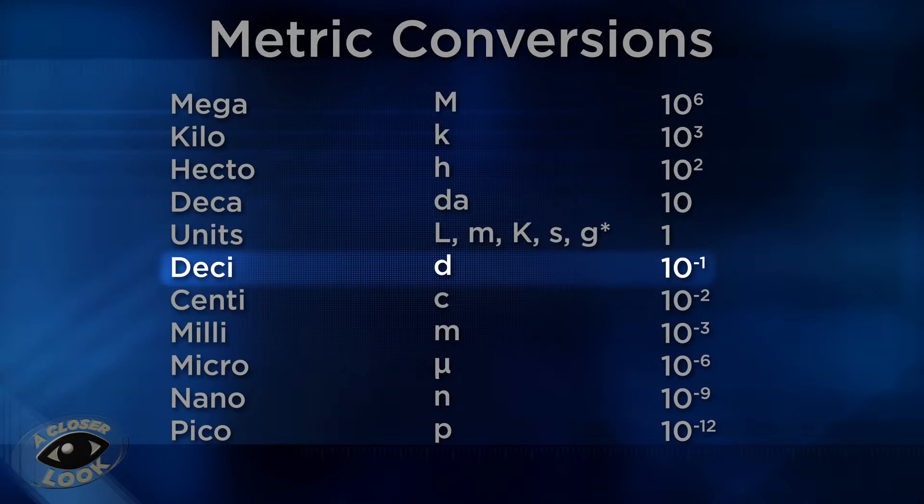Deci stands for one-tenth, represented with a d. Centi stands for one-one-hundredth, represented with a c. Milli stands for one-one-thousandth, represented with an m.